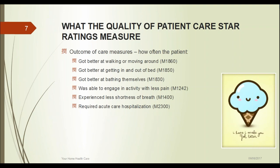Some things that create the star rating include process of care measures — how often the agency's patient went to inpatient care timely, whether we provided drug education timely, and whether the patient had a flu vaccine. Outcome of care measures include whether the patient got better walking and moving around — measuring ambulation, transfers, bathing, pain reduction, shortness of breath, and re-hospitalizations. They look at patients who go back into the hospital within 60 days. We also have 48 hours to see a patient from the time we get the referral or find out they've discharged from the hospital, unless the doctor orders something different.